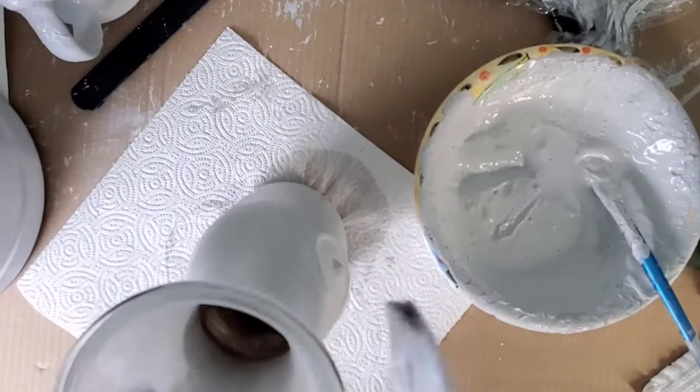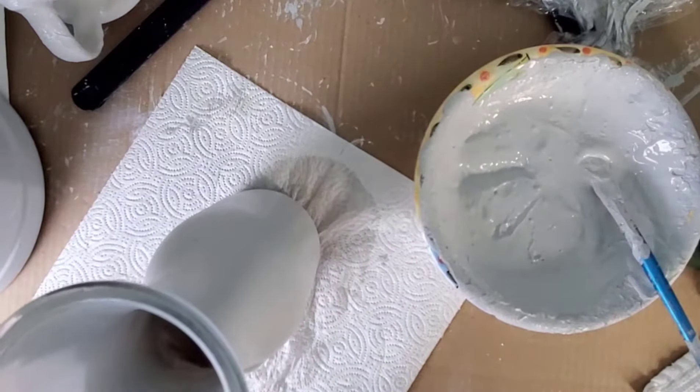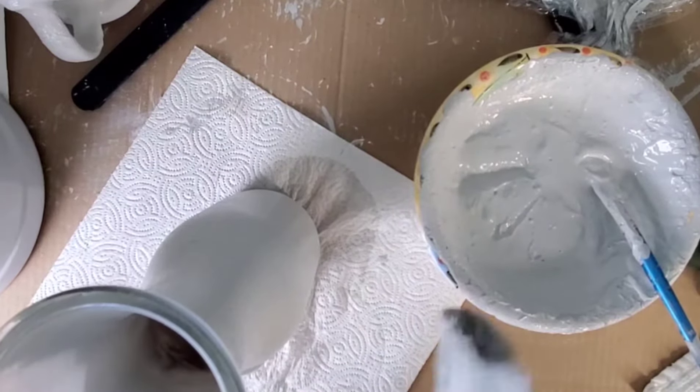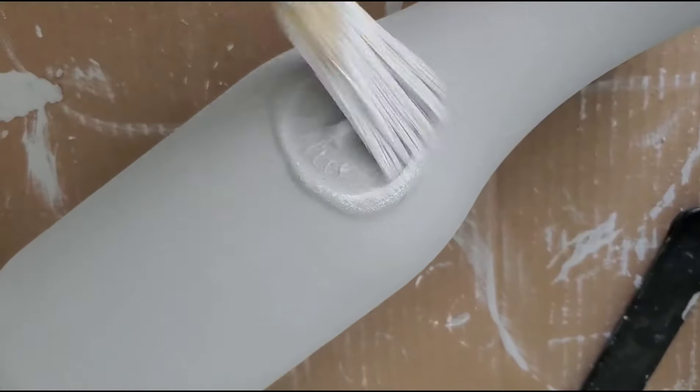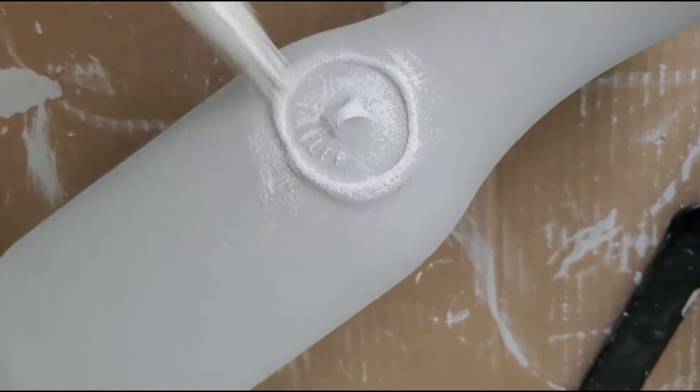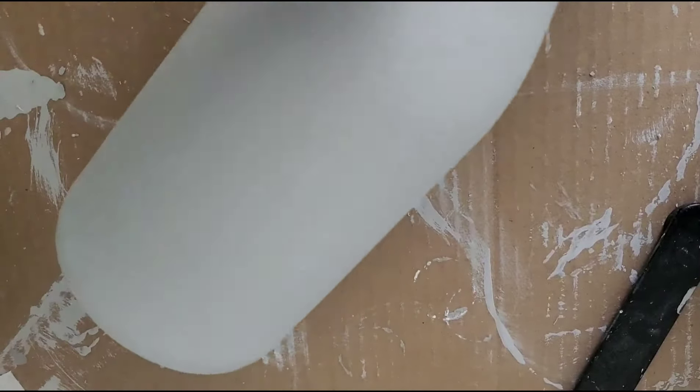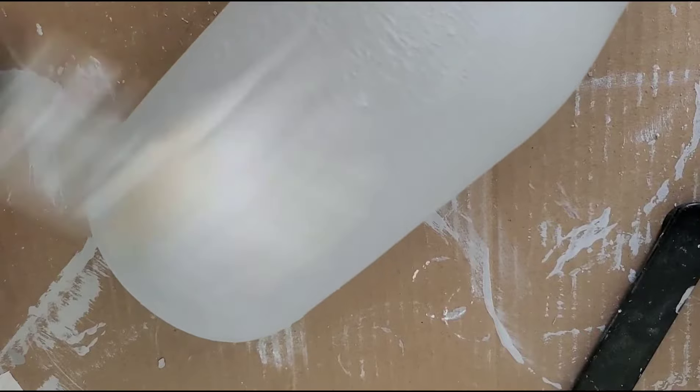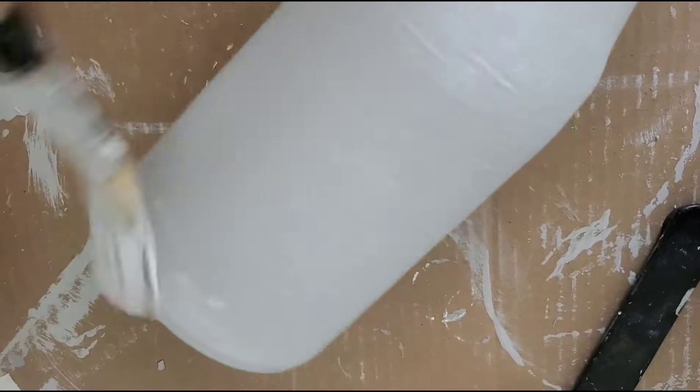Now I'm just going in with the dry brush, just to bring out some of the depth. You can also dab a toothbrush or a small brush in some brown paint and do little spots of flecks in different areas.